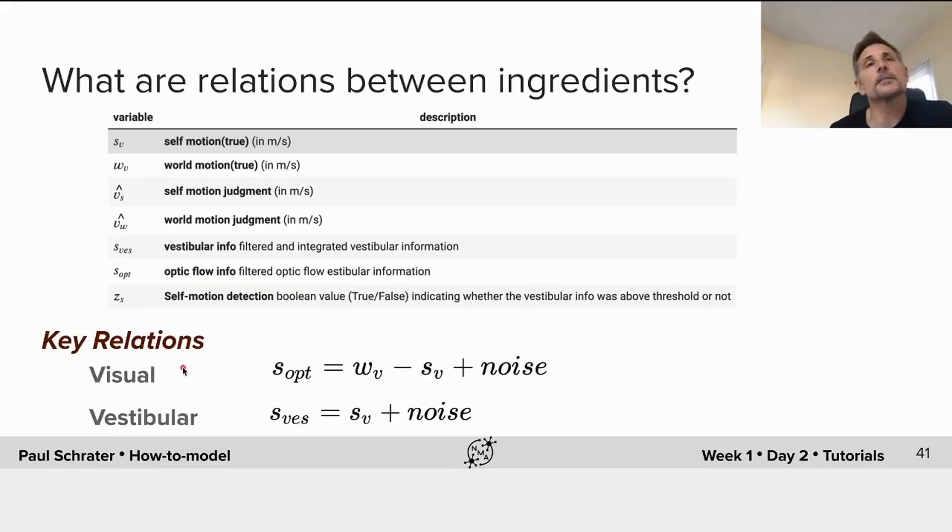The key relationships that we know from our background and from our ingredients are algebraically that the optic flow signal can be generated equivalently by a world motion or a self-motion or any combination of the two. But that these motions will have opposite signs. The world motion in one direction will generate the same signal as a self-motion in the opposite direction. Notice that this also means that these signals could cancel.